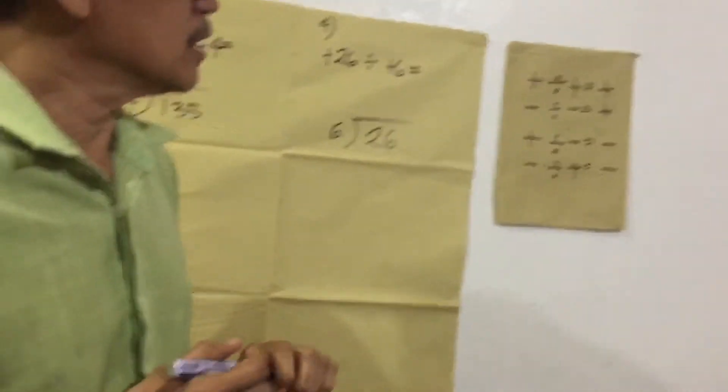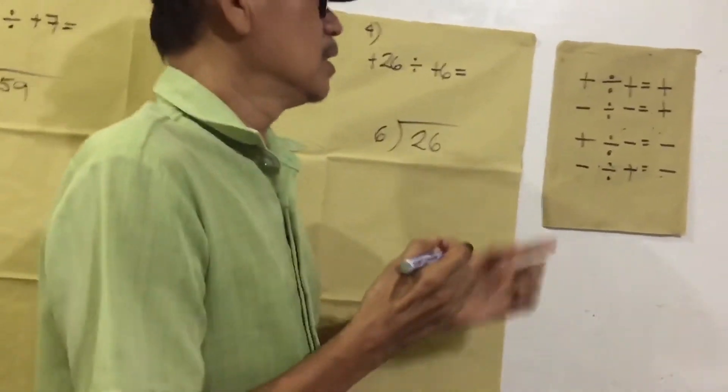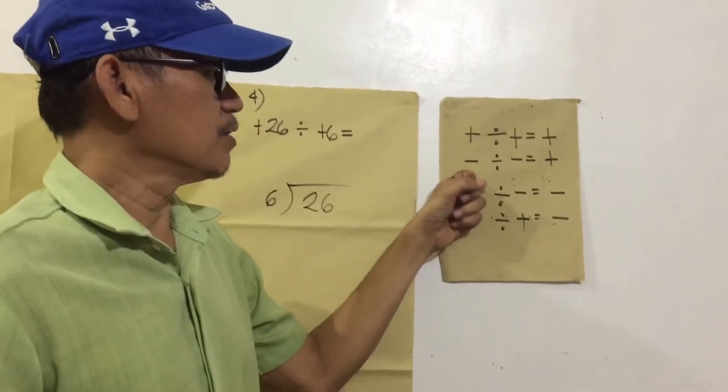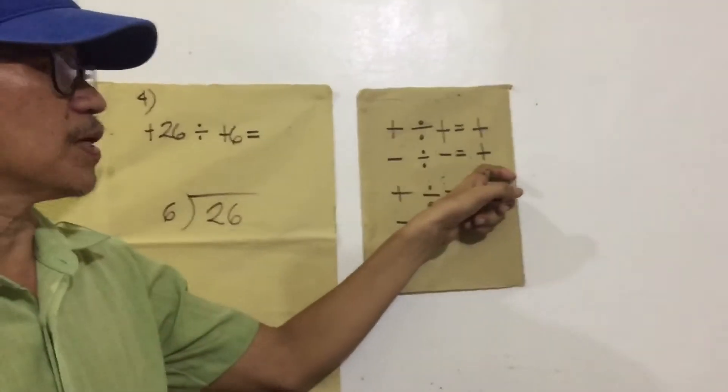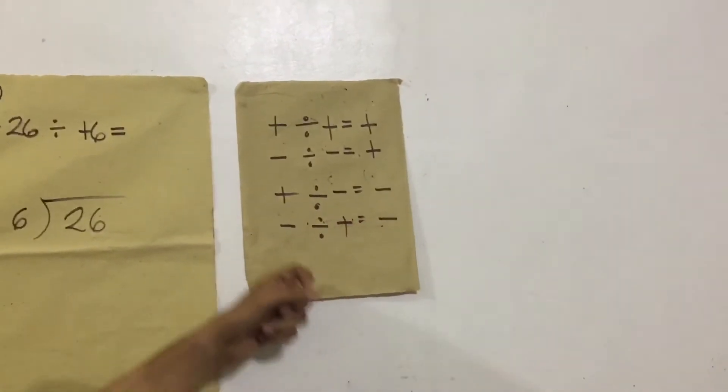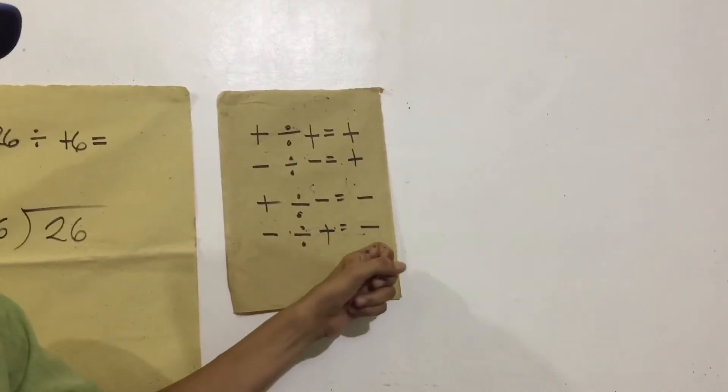Magre-review muna tayo sa division of sign. Positive divided by positive equals positive. Negative divided by negative equals positive. Positive divided by negative equals negative. Negative divided by positive equals negative.